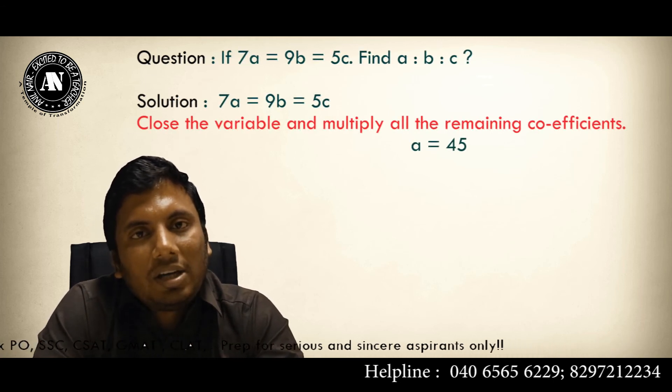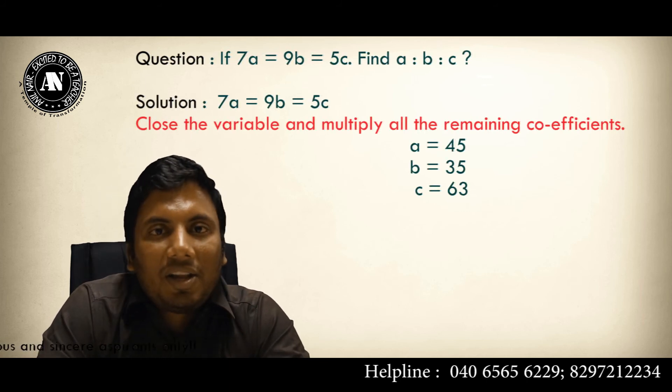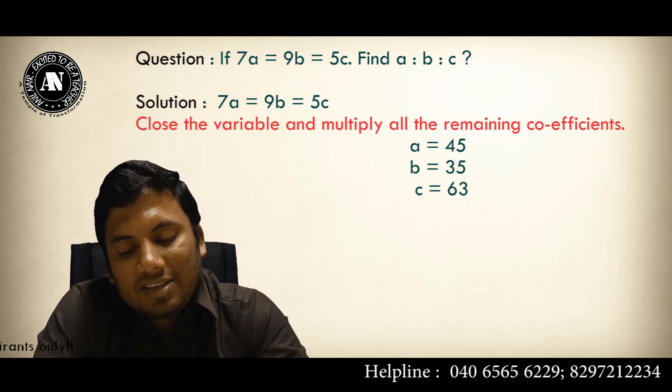To get B, close B. Multiply all the remaining coefficients: 35. To get C, close C. Multiply all the remaining coefficients: 7 times 9 is 63.